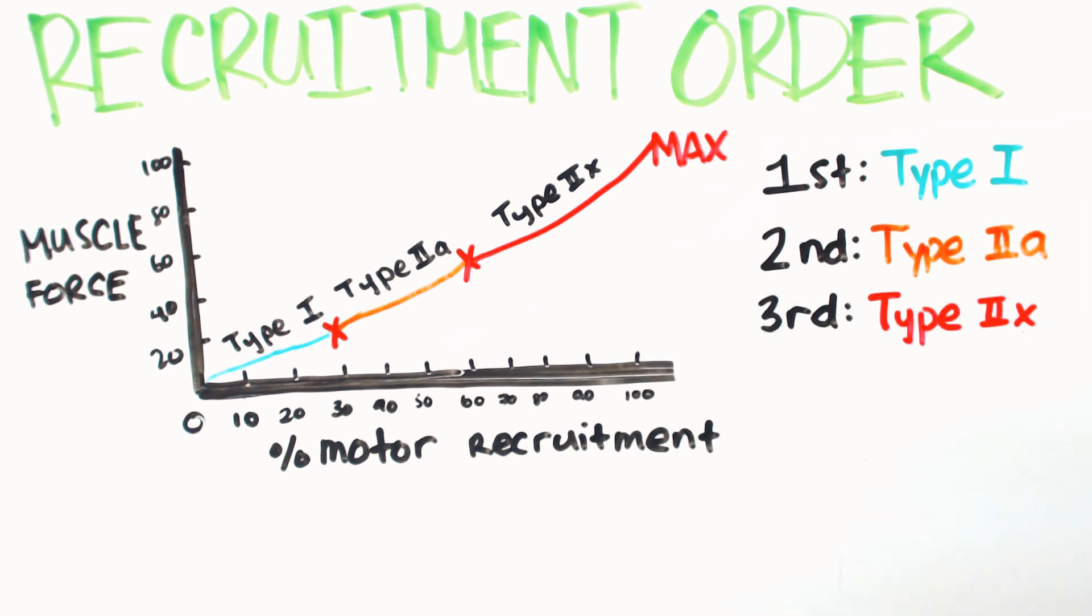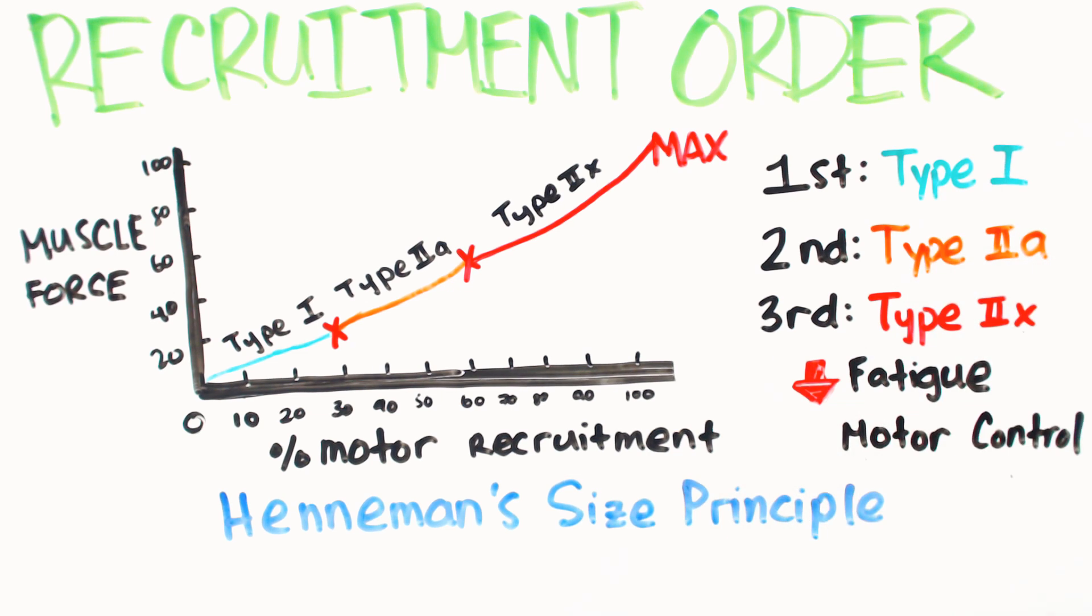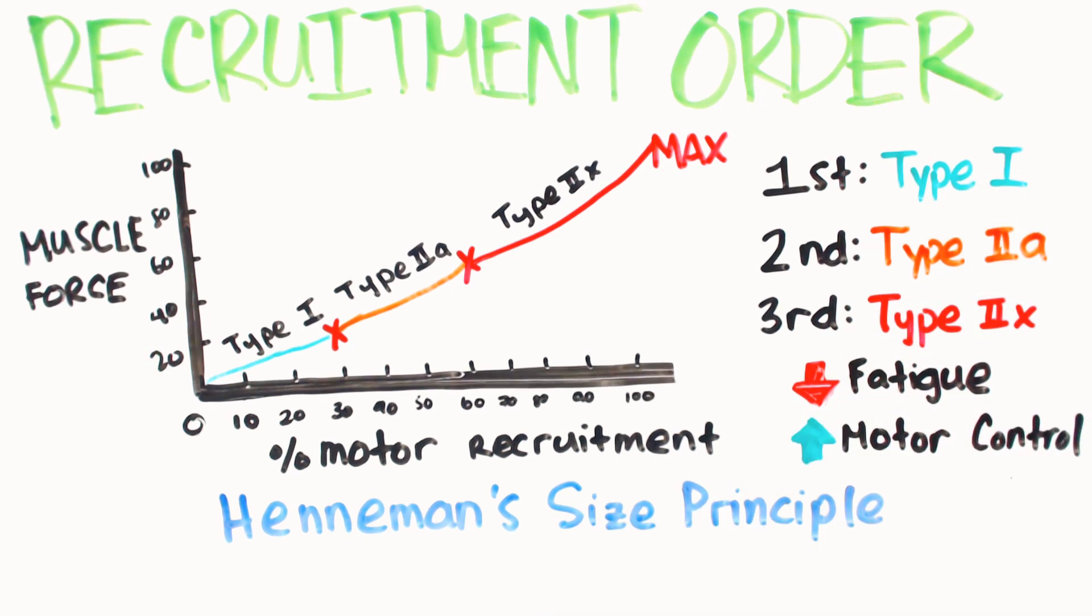This order, known as the Henneman size principle, helps minimize muscle fatigue and allows precise motor control by using no more than the force necessary to complete a movement.